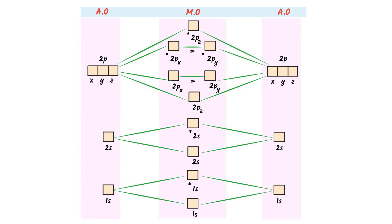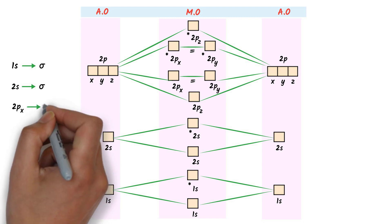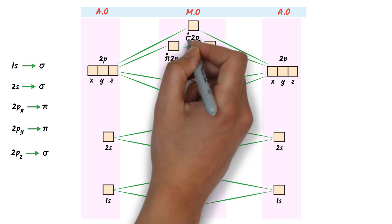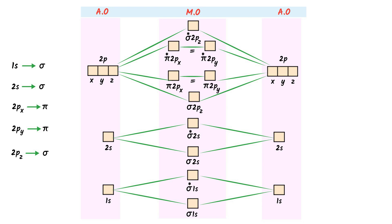Now remember this important point: 1s forms a sigma bond, 2s forms a sigma bond, 2px forms a pi bond, 2py forms a pi bond, while 2pz forms a sigma bond. Hence, I put sigma and pi labels with their respective species — 1s forms sigma, 2s forms sigma, 2px and 2py form pi, while 2pz forms sigma. This is the required molecular orbital diagram.